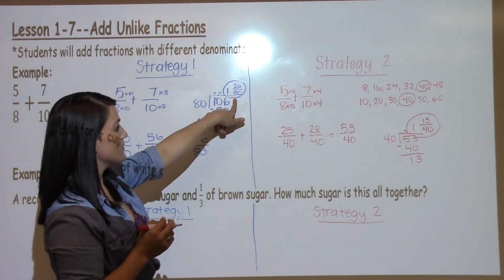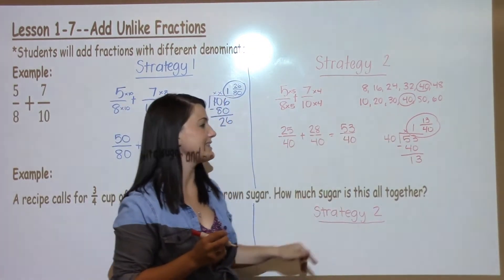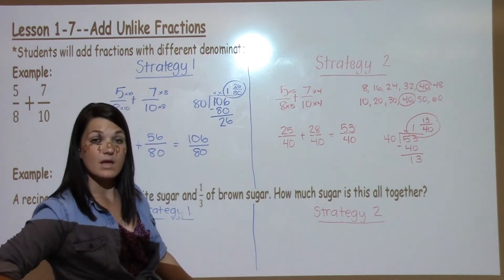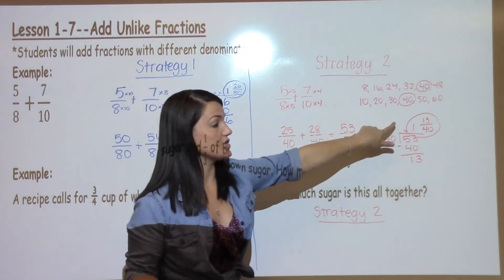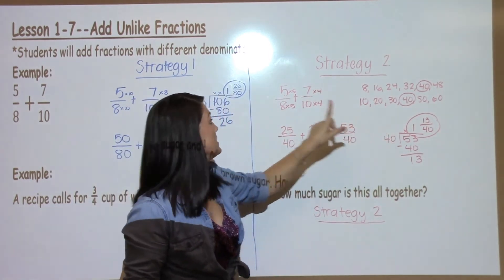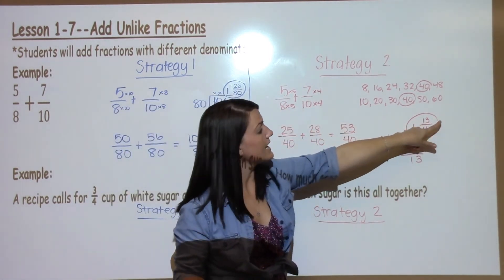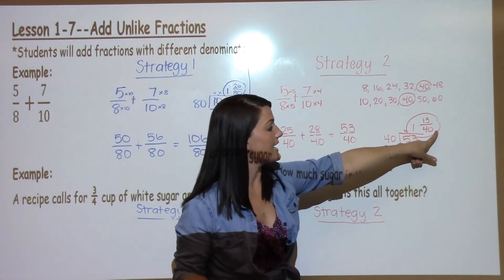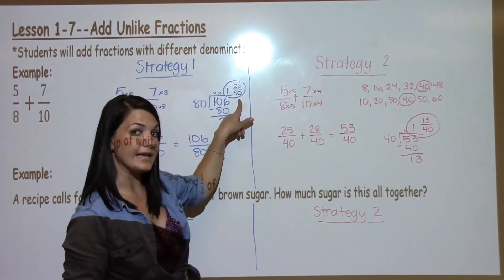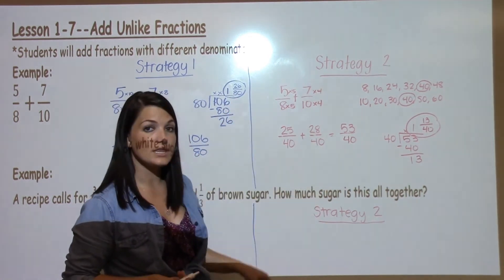You might be looking at my blue answer and my red answer and thinking, but those are not the same. And you're right, they're not. They are equivalent fractions, even though they look different. If I took 13 times 2, I would get 26. 40 times 2, I would get 80. So, these answers are the same.